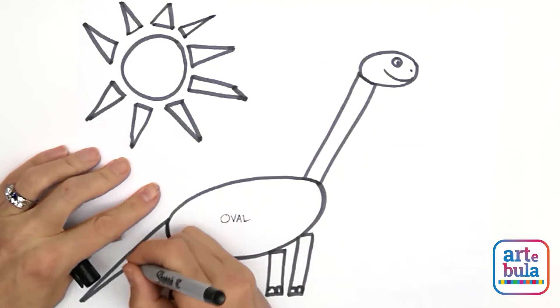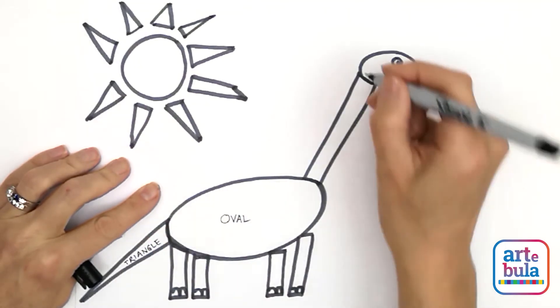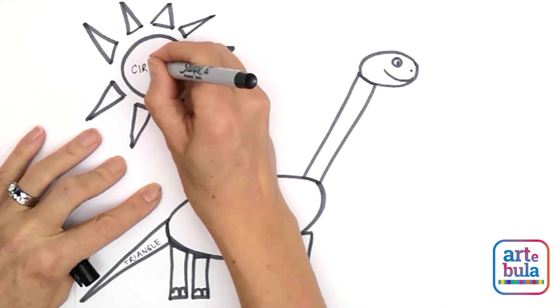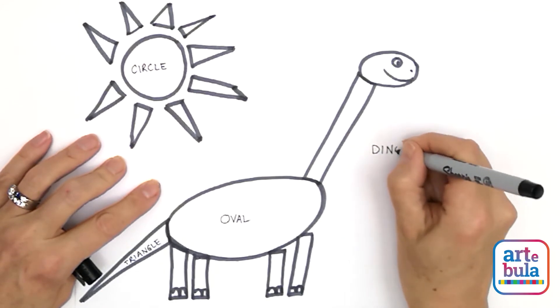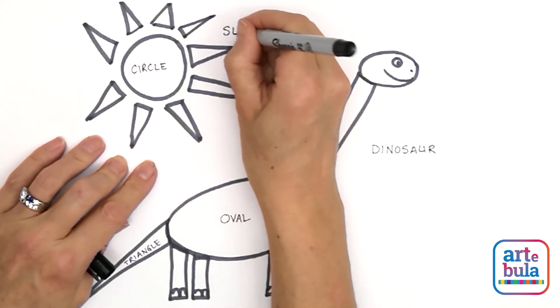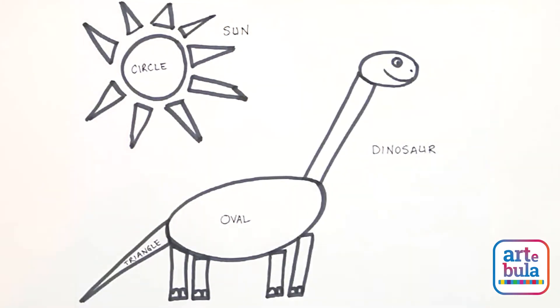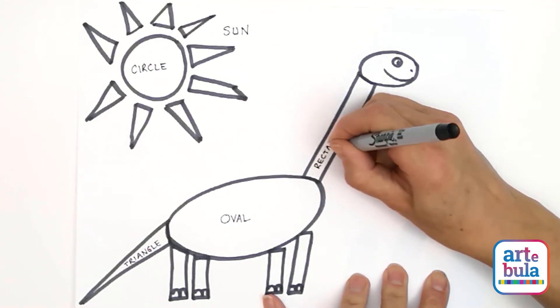This is an oval. This shape is a triangle. And this is a circle. And this shape is a rectangle.